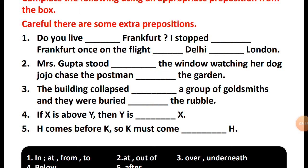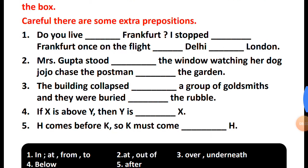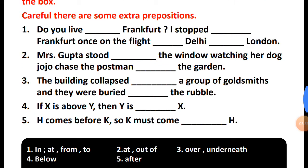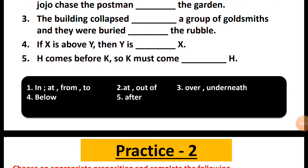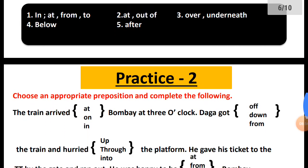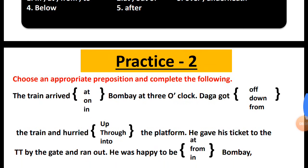If X is above Y, then Y is below X. H comes before K, so K must come after H. This is very easy. The answers are given here on screen. This is your Practice 2.